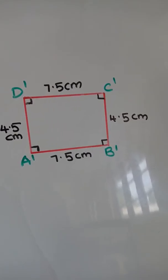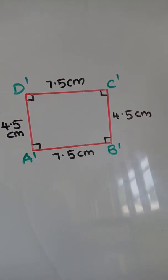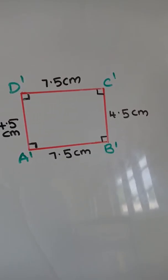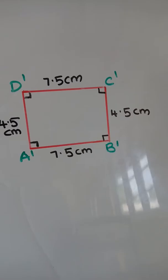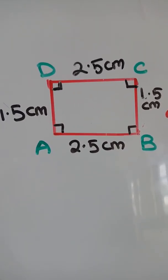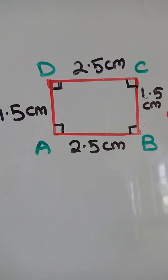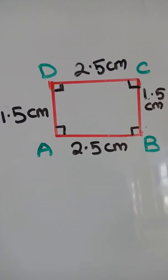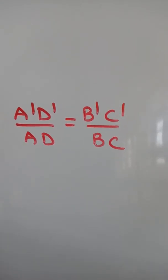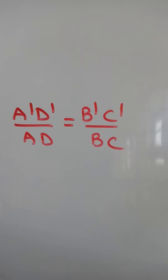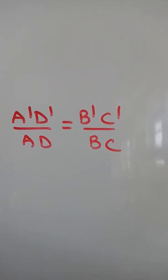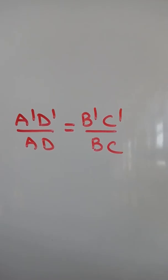So the length of A'D' is equal to the length of B'C', and the length of AD is equal to the length of BC. Then A'D' over AD is equal to B'C' over BC.